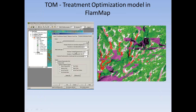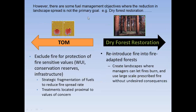This approach has been made operational and is really the only case I know of where a spatial optimization approach has been made available to the fuel planning community. This is a screen capture of the TOM interface — you put in a landscape that's fully treated and one that is not treated, and it tells you which ones are the best to actually implement. However, there are some fuel management objectives where reduction in landscape spread is not the primary goal, such as dry forest restoration.